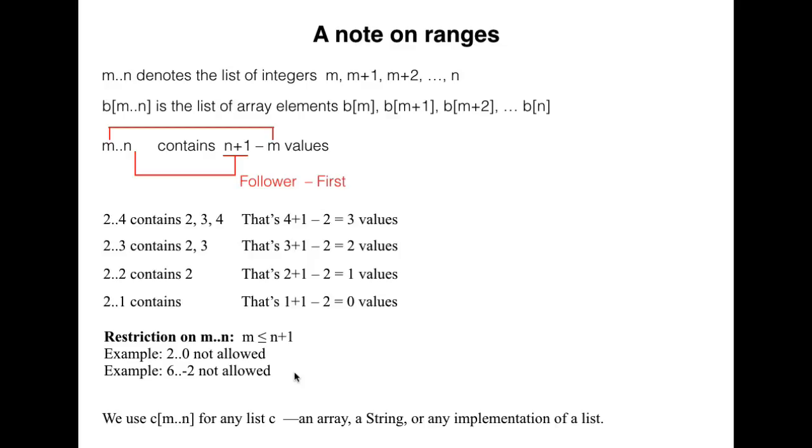The formula for the number of values in m..n is the follower minus the first, n plus 1 minus m. If you forget this formula, you can always figure it out by looking at a small example or two. For example, we saw above that 2..3 contains 2 and 3. That turns out to be 3 plus 1 minus 2 equal 2 values.